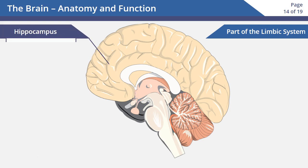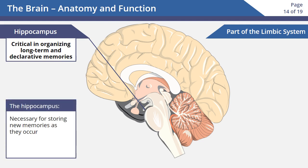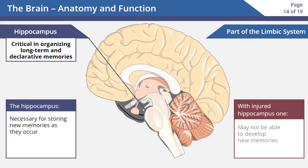The hippocampus is critical in organizing long-term and declarative memories. It's necessary for storing new memories as they occur. Someone with problems in this area of the brain may not be able to develop new memories. Alzheimer's disease, epilepsy, and ischemia negatively impact the hippocampus.